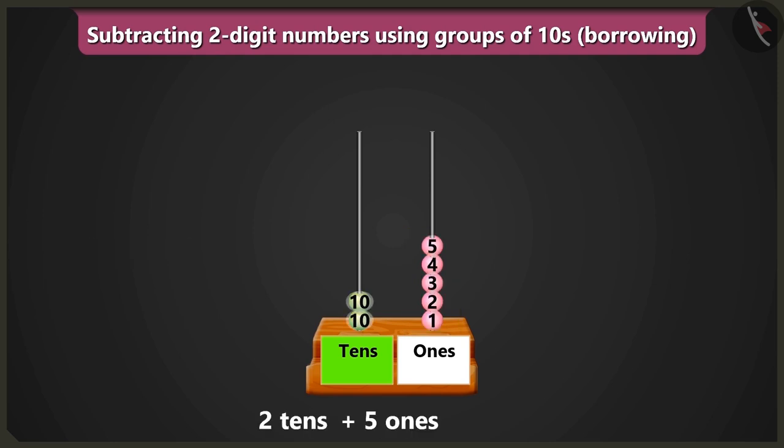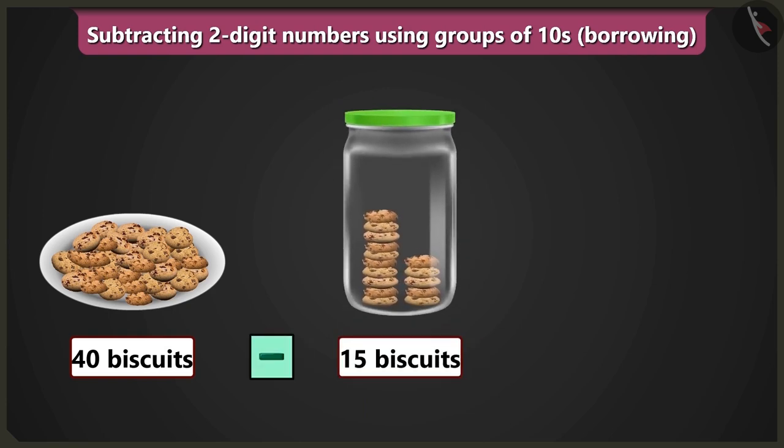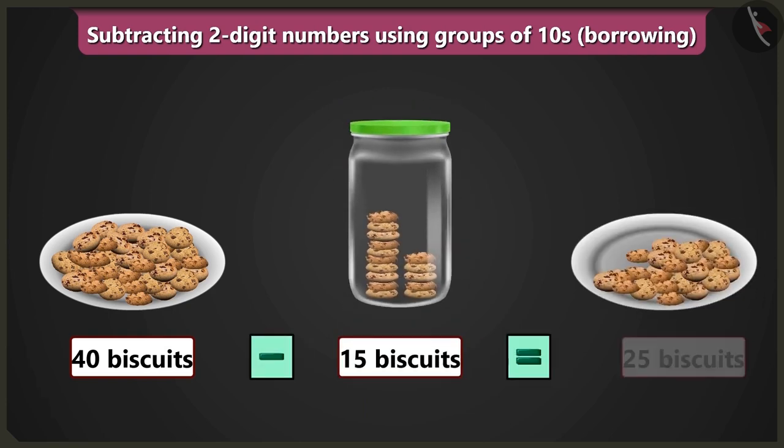So it will be two tens plus five ones equal to twenty-five. Yes, in this way, if we fill the jar with fifteen biscuits, then twenty-five biscuits would remain in this plate.